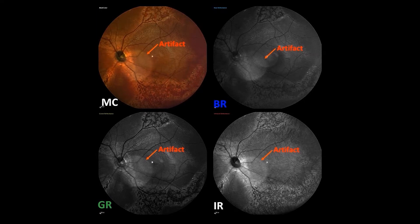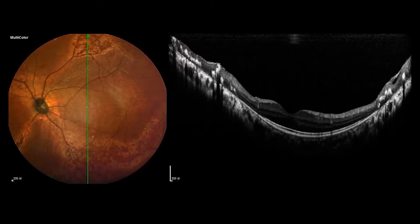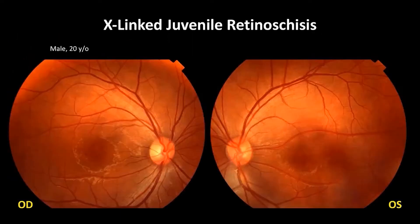Sometimes we see a big light spot on the image when we photograph a 50-degree multicolor image, and this is an artifact. We also see ellipsoid zone loss in the peripheral retina.